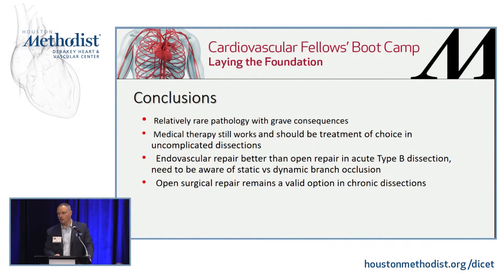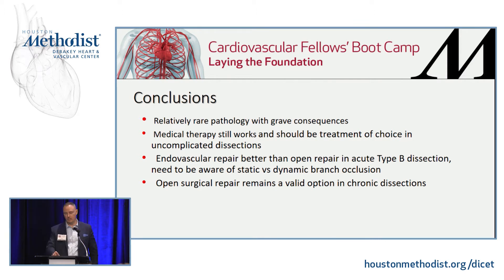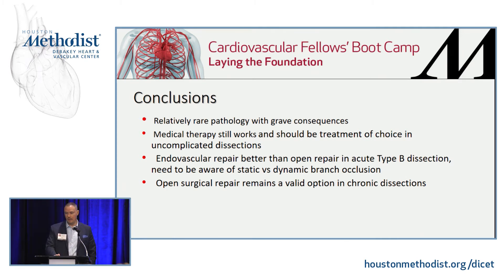In summary, aortic dissection is a relatively rare pathology with grave consequences. Medical therapy works at least initially and should be the treatment of choice for uncomplicated dissections, although that is changing as we identify risk factors predisposing patients to aneurysmal degeneration — it's easier to treat them upfront than in the chronic phase. Endovascular repair is much easier than open repair for acute type B dissections. Operate on those with static or dynamic obstruction in the acute setting, and understand those mechanisms. Open surgical repair remains valid in the chronic phase.